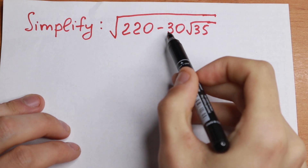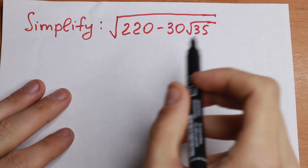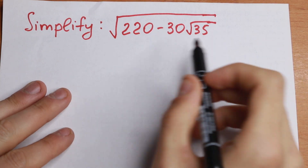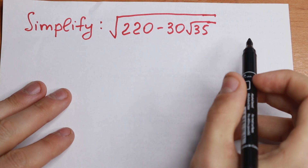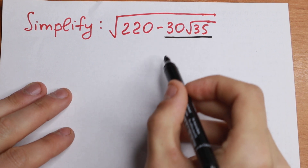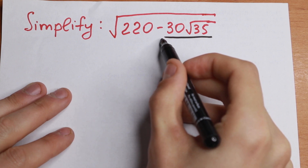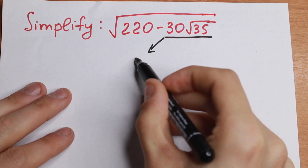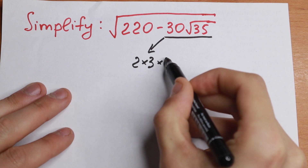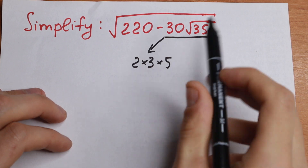Let's start with 30 times the square root of 35. Let's try to simplify this a little bit — try to write it as a product, so we can create a perfect square. So let's do this. I want to start with these numbers. This 30 is a good number because we can write it as 2 times 3 times 5, which equals 30 — since 2 times 3 is 6, and 6 times 5 is 30.